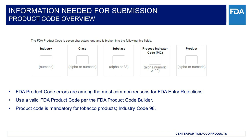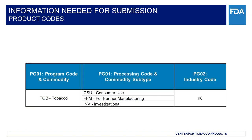Subclass Code: this element is one letter and represents the flavor of the tobacco product offered for import. Process Indicator Code, or PIC: this element describes the processing code of the tobacco product. When in doubt, you may wish to contact the manufacturer for processing information. Product, or Group: this element is two numeric characters in length and relates directly to a particular industry or class combination, identifying the specific product. The FDA Supplemental Guide identifies industry codes associated with program and processing code combinations. This information is integral for building an accurate product code for all FDA products, including tobacco products.